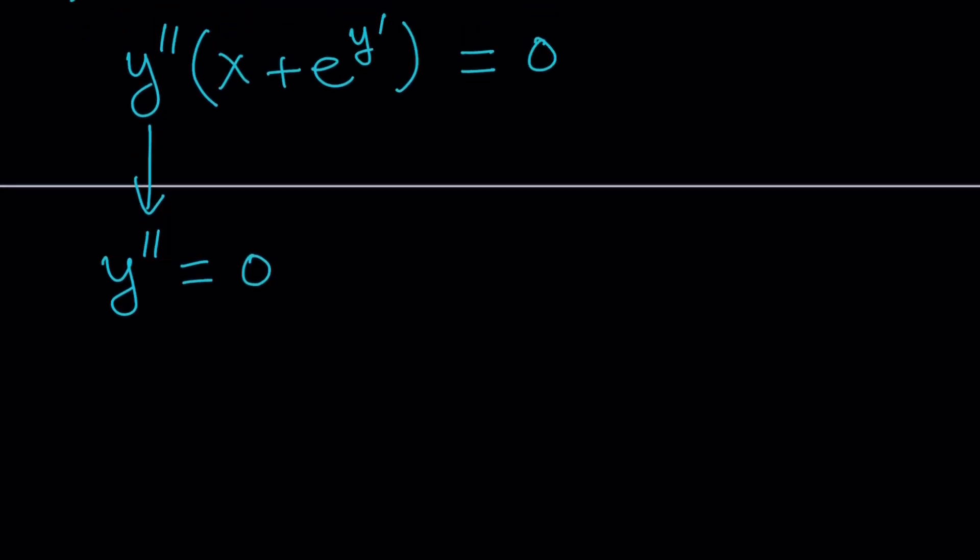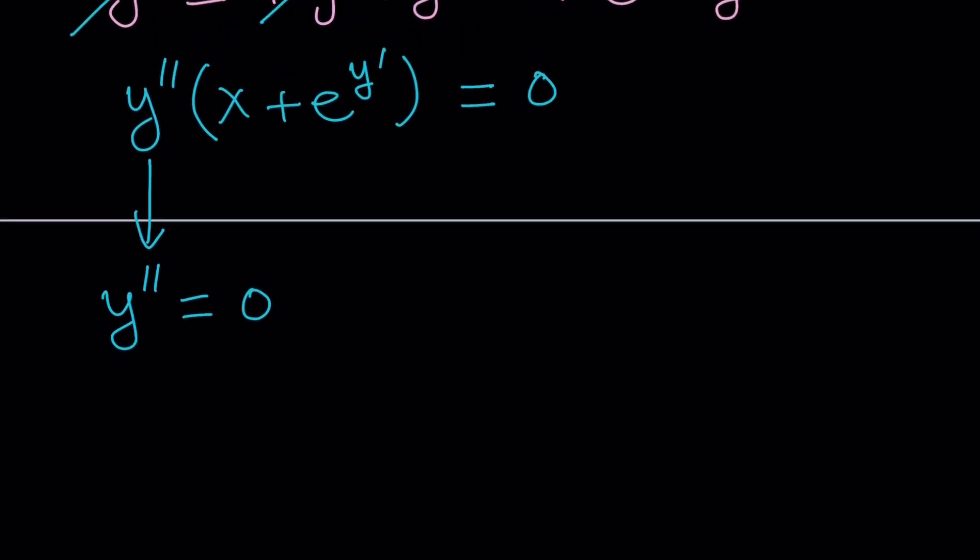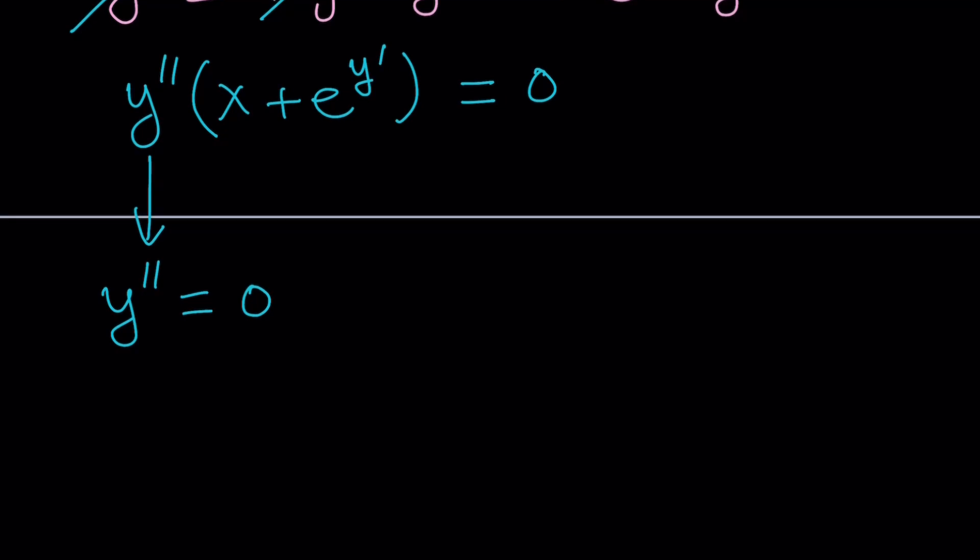So, to solve this differential equation, we have to think about the derivative of what equals zero. And the answer is a constant. So y prime, whose derivative is y double prime, must be a constant. Let's call that k.